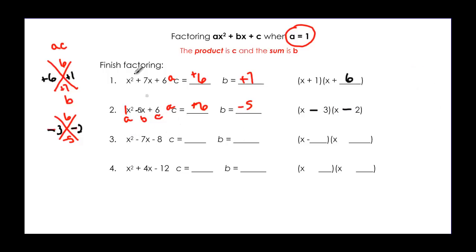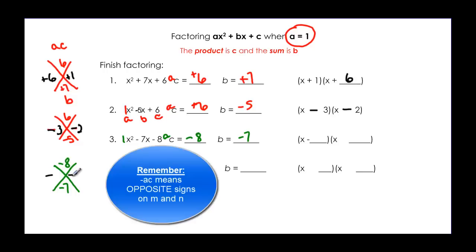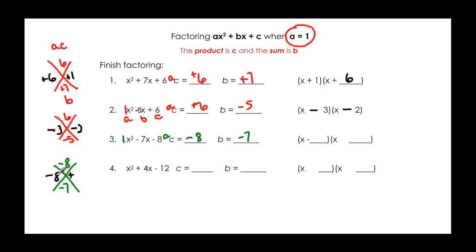Next, ac = 1 times negative 8 = negative 8, and the middle term b = negative 7. In the X, negative 8 on top and negative 7 on the bottom. Since the product is negative, I need opposite signs, and I want the larger number to be negative for a negative result. Negative 8 and positive 1 add to negative 7. So the factors are (x-8)(x+1).